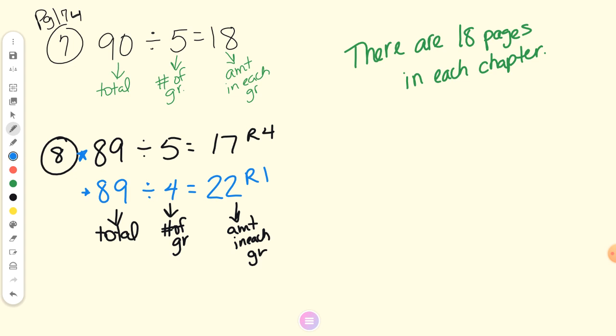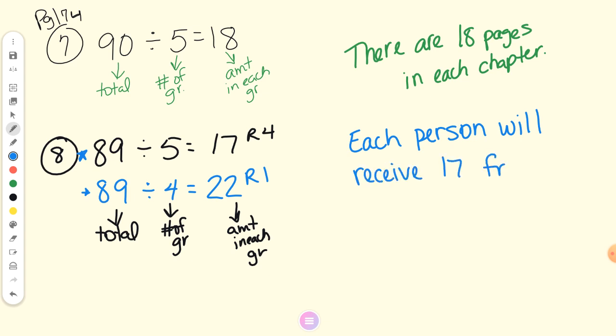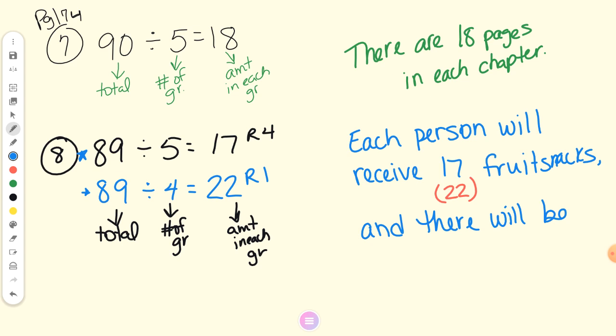Answer sentence, Lori — each person will receive 17 fruit snacks. I'm going to put 22 in parentheses for those who did the other interpretation. And there will be four left over — in parentheses, one. Questions on that one? Does it make sense why it could be either? Okay, number nine.